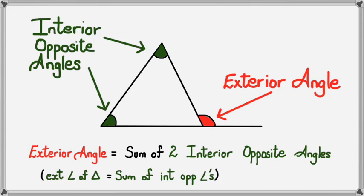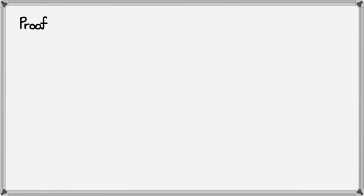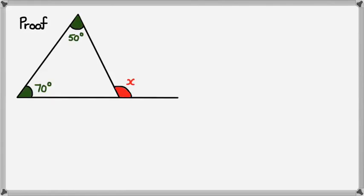You might wonder how this is possible — I'm going to show you the proof quickly in the next slide, and then we'll do a couple of examples. Here's the proof: say we have a triangle like this, and X is the exterior angle (the red one), and the two green interior opposite angles are 70 and 50 degrees.